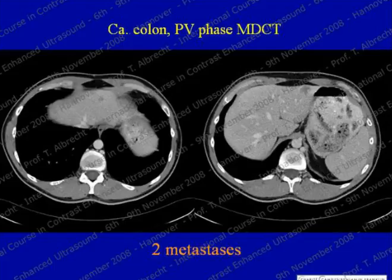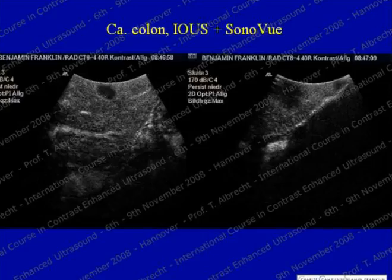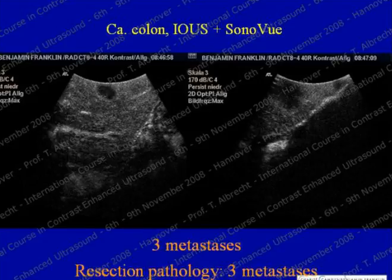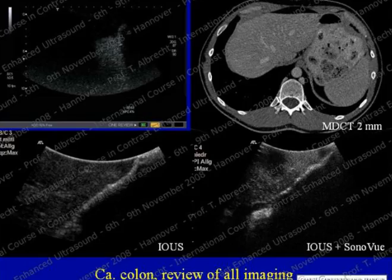This is the intraoperative ultrasound of this case, with one metastasis shown high up at the dome and a second one. After injecting contrast medium intraoperatively, it confirms the first metastasis, the small one high up, the second one, and then right at the edge a third metastasis — which was confirmed by pathology after resection. This shows that additional lesions can be seen on contrast-enhanced ultrasound during the operation. Looking back at the CT carefully, you can see the lesion that was detected intraoperatively but not interpreted prospectively.